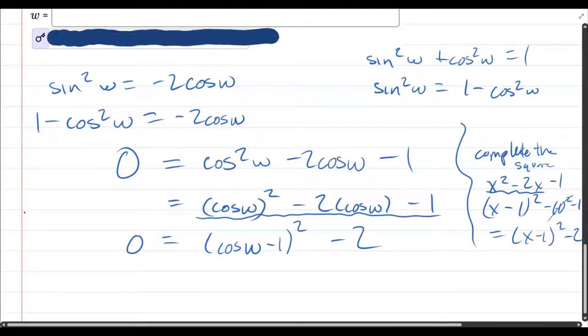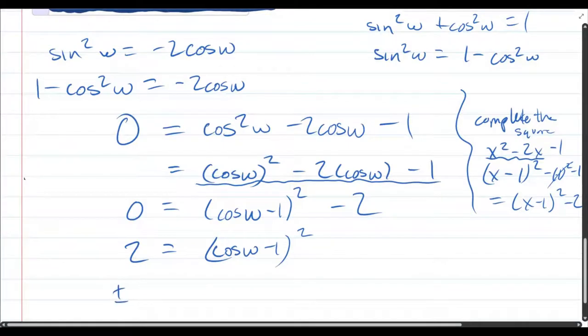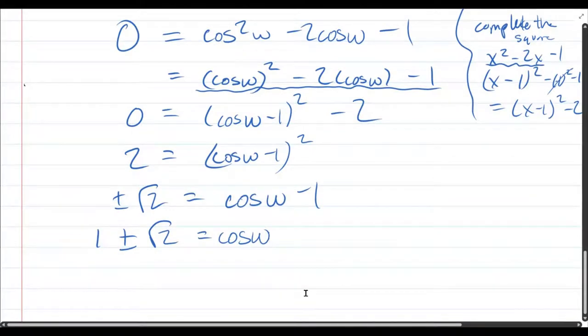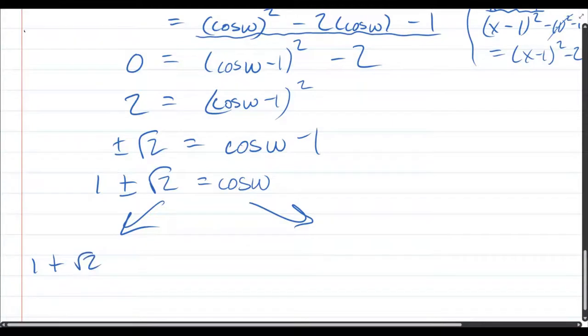So add two to both sides. Square root both sides. Remember, you get the plus minus square root two. Cos two equals cos w minus one. Add one to both sides. So the one plus square root two equals cos w or one minus square root two equals cos w.